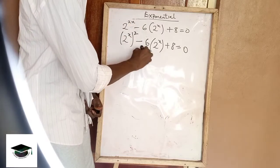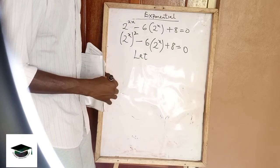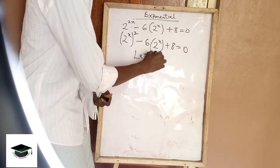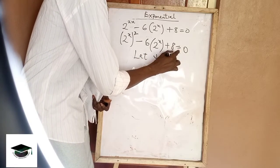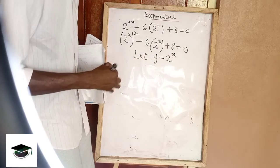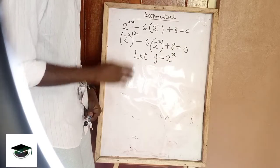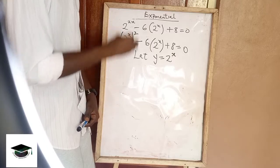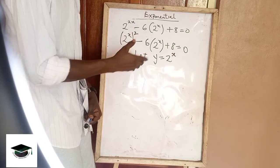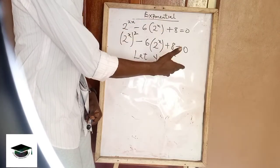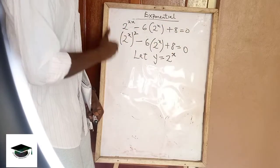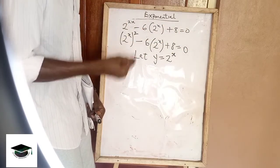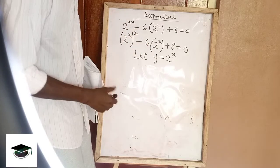For me, I'm going to make use of y. Let y equal to 2 raised to power x. And what this thing simply means is that anywhere you see 2 raised to power x, you put y. So from this equation, whenever you see 2 raised to power x, you should simply replace it with y. That's what this thing means.